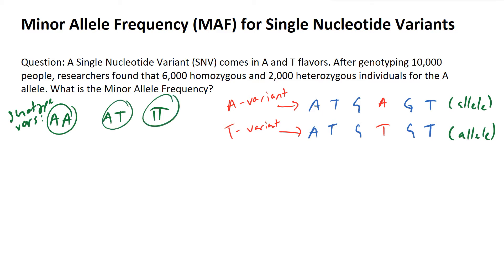The data given in this problem says we've got 10,000 individuals. We're told that 6,000 of them are of the homozygous AA variant, and 2,000 are of the heterozygous AT variant. Since we know 6,000 and 2,000 are already accounted for with only three possibilities, we can deduce that there must be 2,000 of the homozygous TT variant.